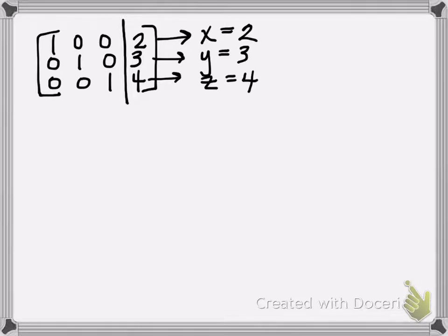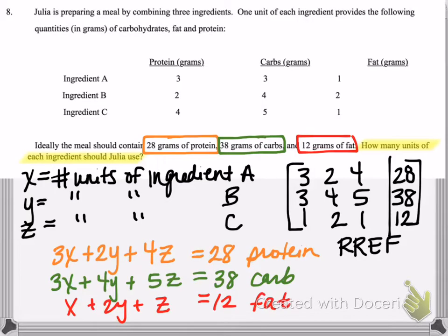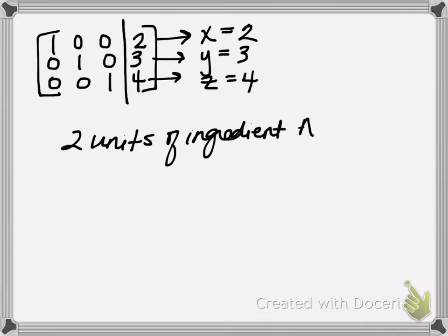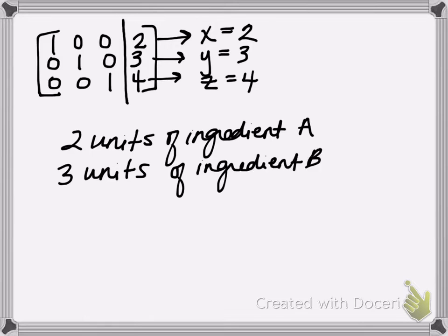Since this is actually an application, we want to answer the question in words. Going back to our variable key, we saw that x was the number of units of ingredient A and so on. Therefore, we know we need 2 units of ingredient A to satisfy the requirements in the problem for the amount of protein, carbs and fats. We need 3 units of ingredient B, and we will need 4 units of ingredient C. And we're done.